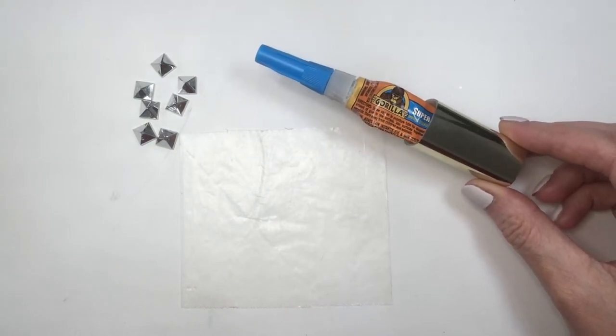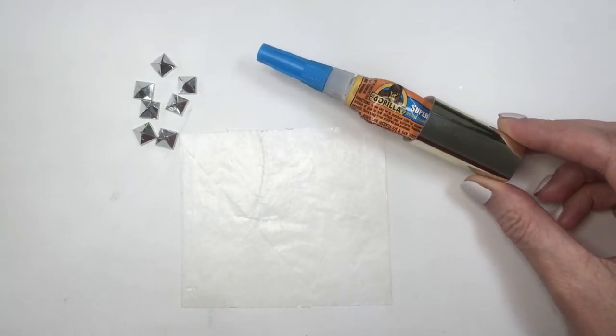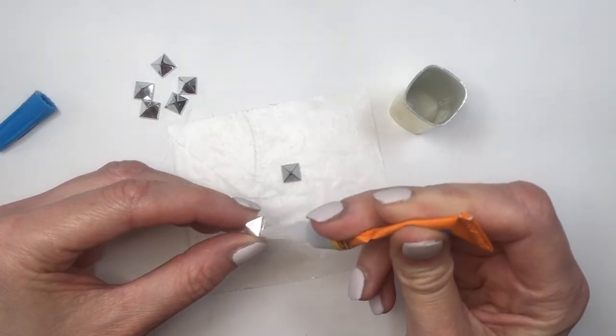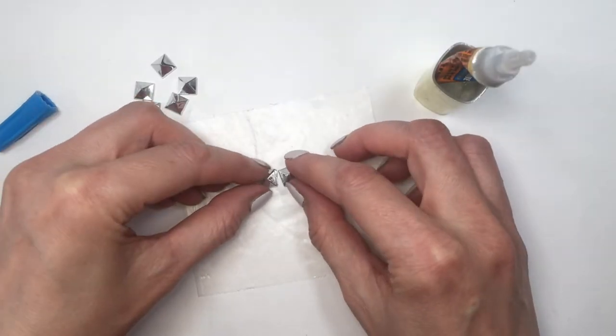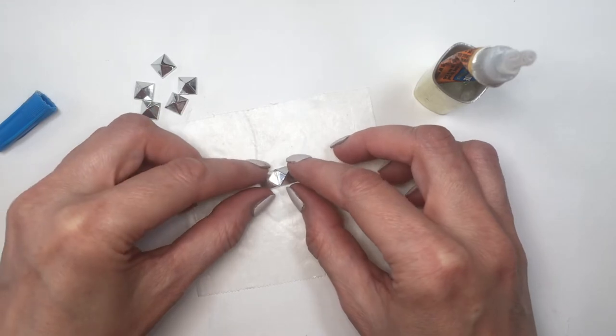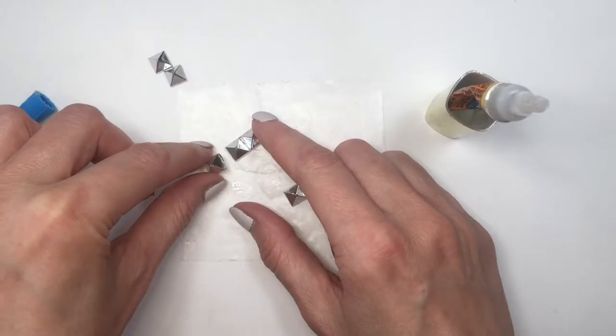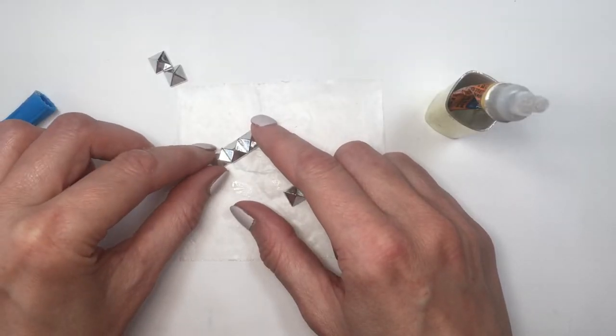I do have a DIY showing you where I got this from. I'm going to be working on a piece of wax paper just so that my glue doesn't stick to my table. I'll be adding the glue to the sides of my rivets, placing them on top of my table and gluing them together.